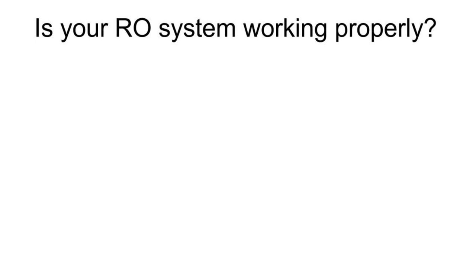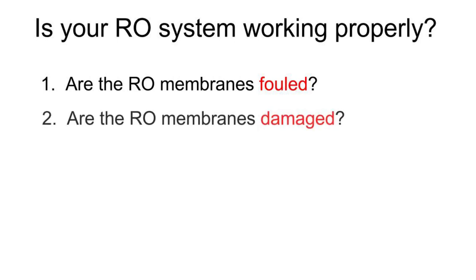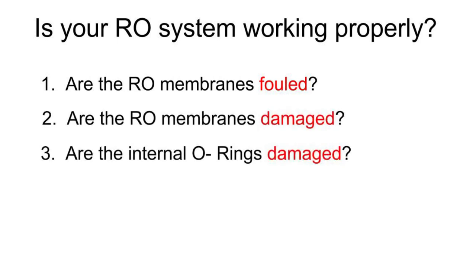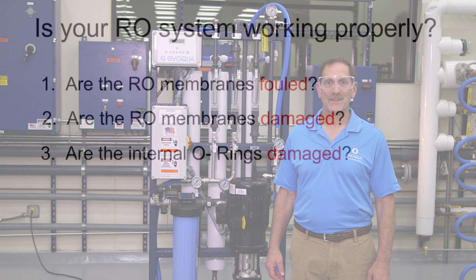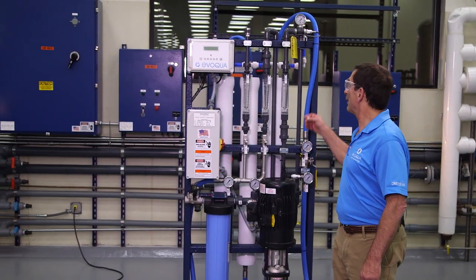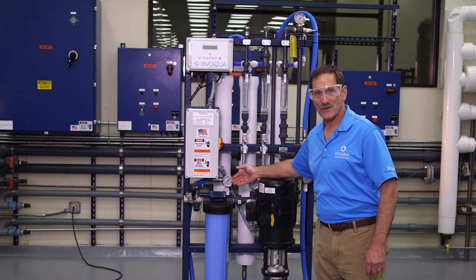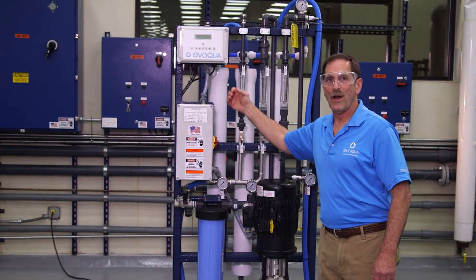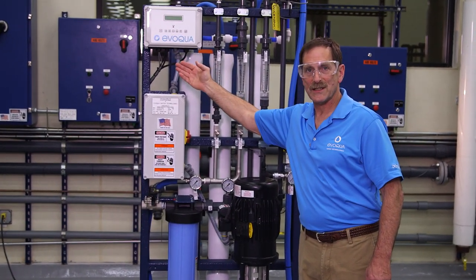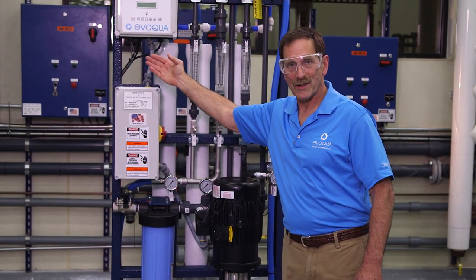You collect data to determine the following: Are the RO membranes fouled? Are the RO membranes damaged? Are the internal O-rings damaged? The data you collect is feed water, product, and reject pressures. Also, feed water conductivity and temperature, and product water conductivity.